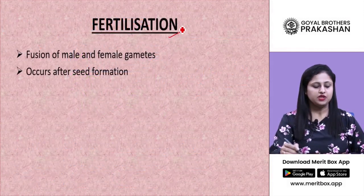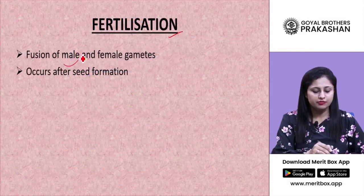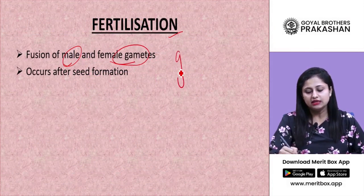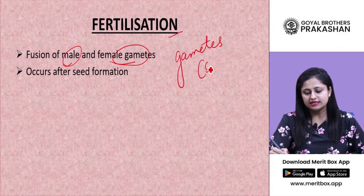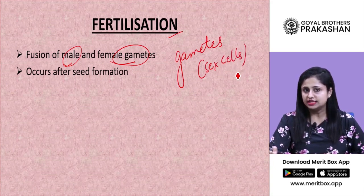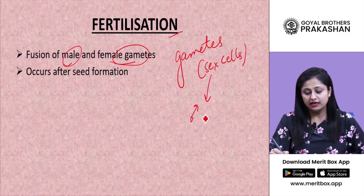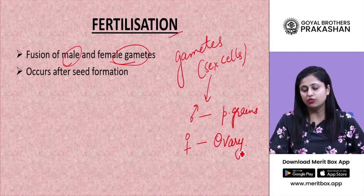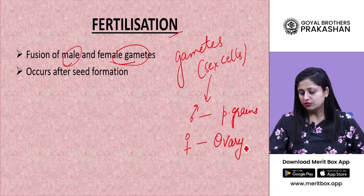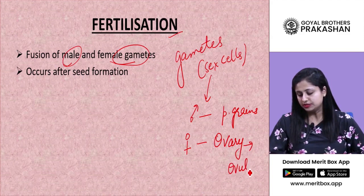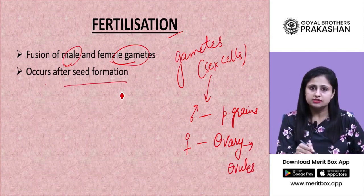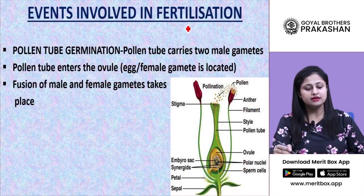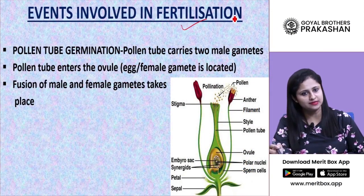Fertilization is the fusion of male and female gametes. Gametes are the sex cells which take part in reproduction. Sex cells in case of the male are pollen grains, and in the female they include ovules released by the ovary. Fertilization occurs after seed formation or seed set.